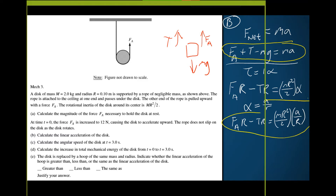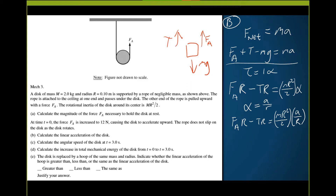Our goal is to find the linear acceleration a, so we combine both equations. Simplifying the torque equation — all the R's cancel out. Then we solve for tension: subtracting FA and accounting for the sign, tension equals FA minus ma/2.